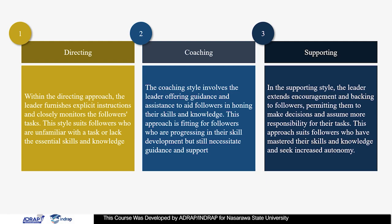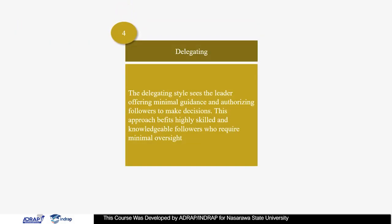Supporting: in the supporting style, the leader extends encouragement and backing to followers, permitting them to make decisions and assume more responsibility for their tasks. This approach suits followers who have mastered their skills and knowledge and seek increased autonomy. Delegating: the delegating style sees the leader offering minimal guidance and authorizing followers to make decisions. This approach befits highly skilled and knowledgeable followers who require minimal oversight.